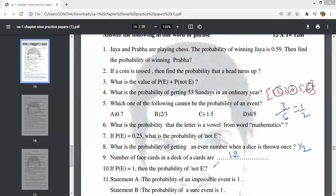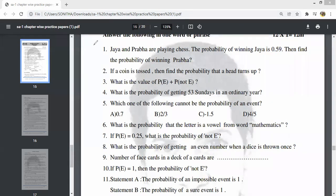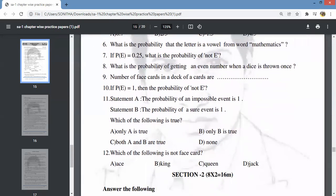If P of E equals 1, then the probability of not E is 1 minus P of E. Question number 11: probability of an impossible event is zero.